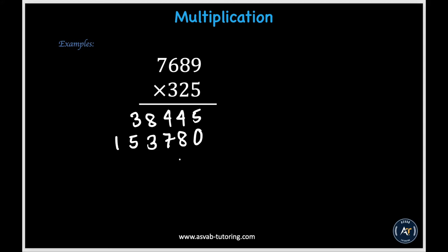Now we're working with the hundreds digit, so we put zeros under both the ones and tens places. We multiply 3 times 9 to get 27; put down the 7 and carry over the 2. Then 3 times 8 gives us 24, and 24 plus 2 gives us 26; put down the 6 and carry over 2. Then 3 times 6 gives us 18, and 18 plus 2 gives us 20; put down the 0 and carry over 2. Then 3 times 7 gives us 21, and 21 plus 2 gives us 23.